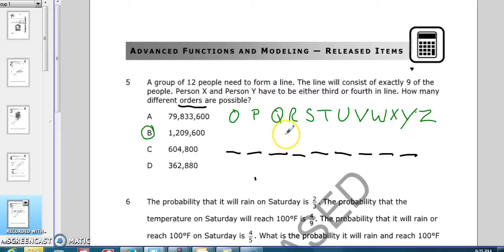However, X and Y have to be either 3rd or 4th in line. So, we have X and Y, or Y and X. Now that takes 2 people out of our list of people. It also takes 2 positions out of our 9 positions. And so we're down to 10 people and 7 positions.